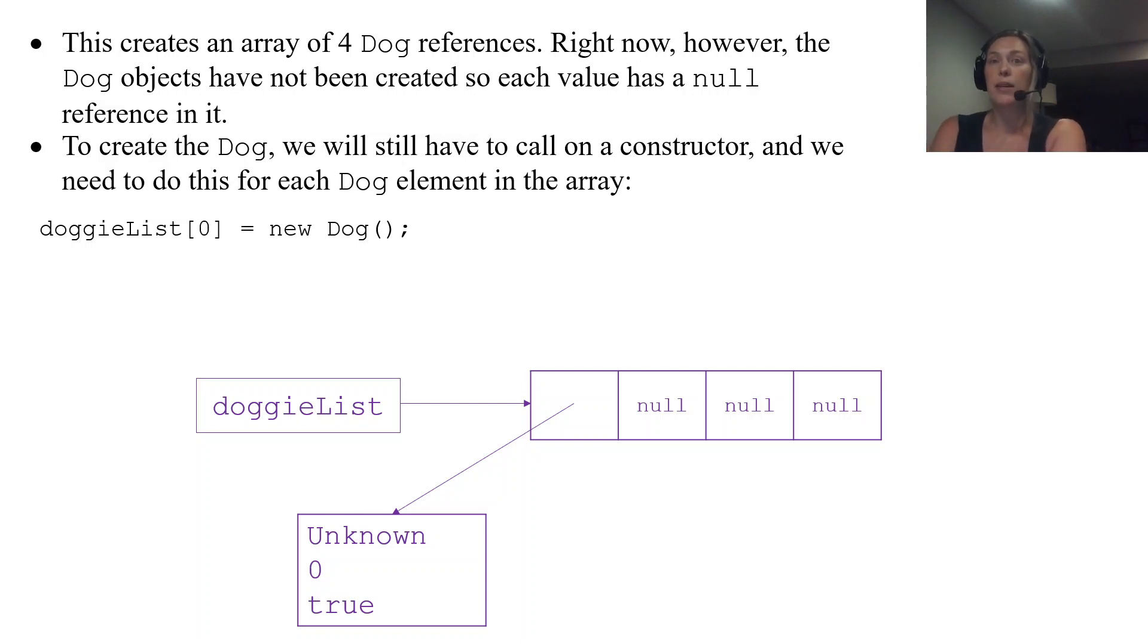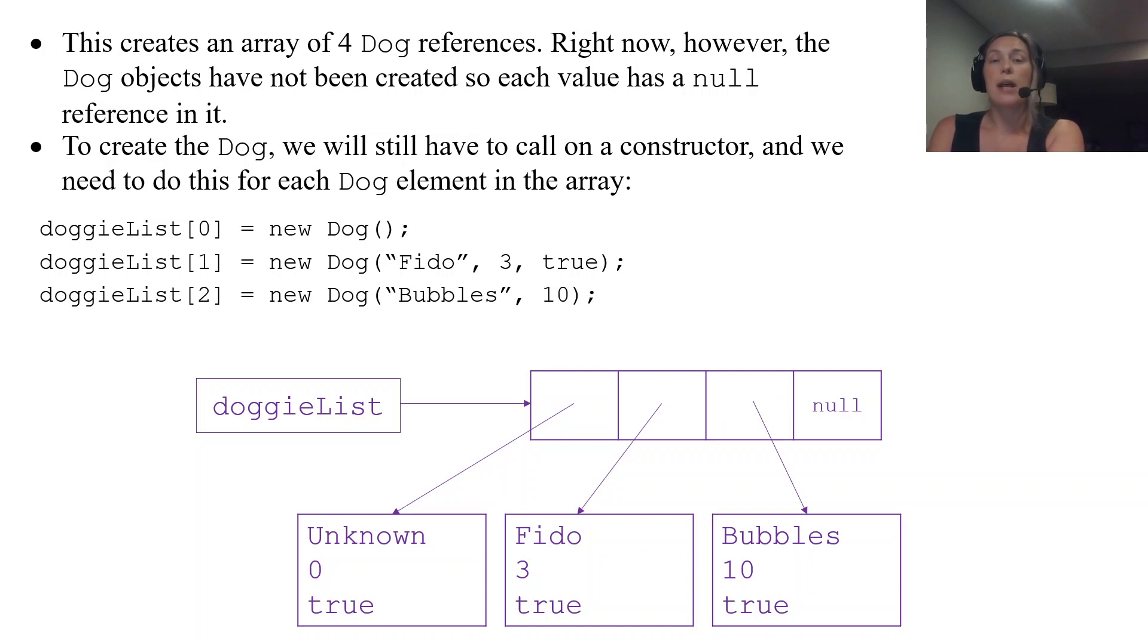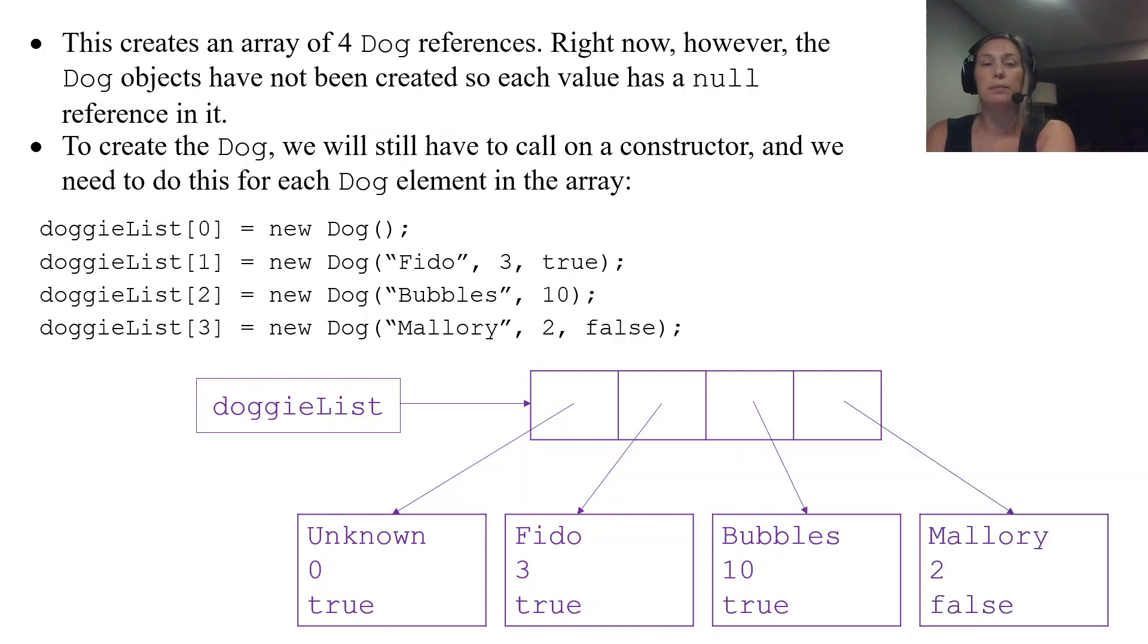So doggieList[1], I could use my parameter constructor: new Dog("Fido", 3, true). That first index would have Fido, 3, true as my dog object. Then list[2]: Bubbles, 10—that's my other parameter constructor that only accepted two parameters, and then true was the default value for good dog. Then I added a last dog, Mallory, who is not a good dog—false—but she's two years old, so what can we expect from her?